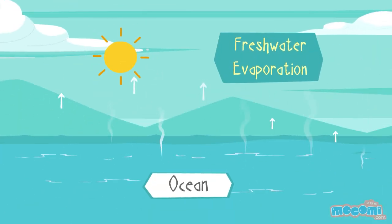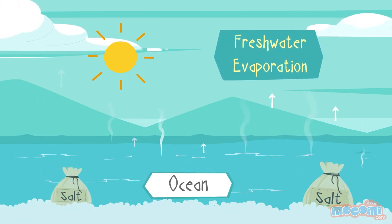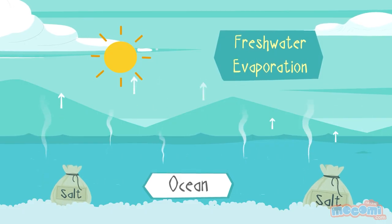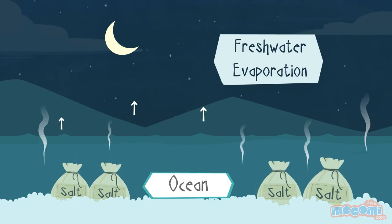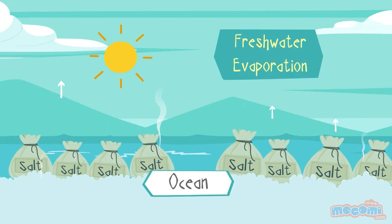Evaporation makes seas saltier. Fresh water evaporates, leaving salt and dissolved minerals behind. It has taken millions of years of salt deposits and evaporation to make seas and oceans as salty as they are today.